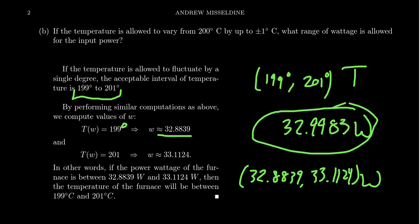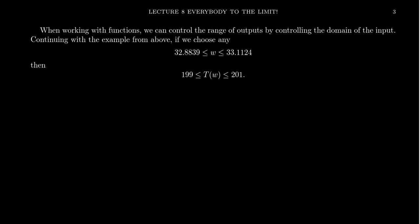This example is really motivating this idea that we're trying to build towards with the idea of a limit. When working with these functions, we can control the range of the output by controlling the domain of the input. We didn't have direct control on the temperature, but we did have direct control on the wattage. When you go home and bake cookies, you don't actually control the temperature. You control the power. When you turn the knob, that doesn't make the temperature increase, that makes the power increase, which then has a consequence of changing the temperature.